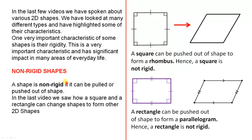Non-rigid shapes. A shape is non-rigid if it can be pulled or pushed out of shape. In the last video we saw how a square and a rectangle can change shapes to form other 2D shapes.